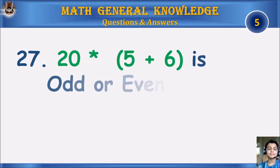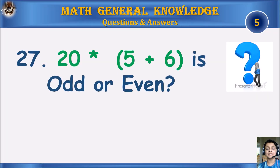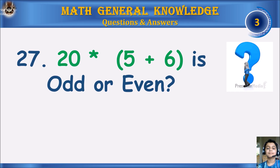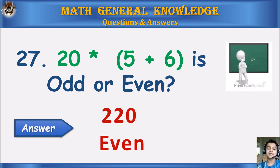20 times 5 plus 6 — is it odd or even? Your time starts. The answer is even (220).